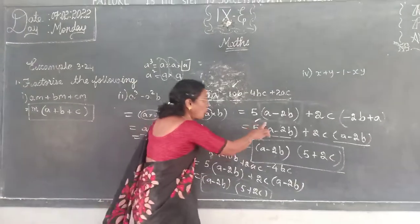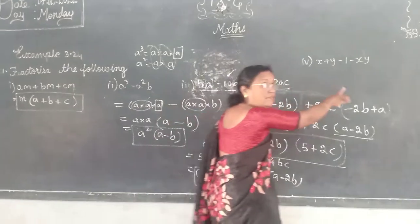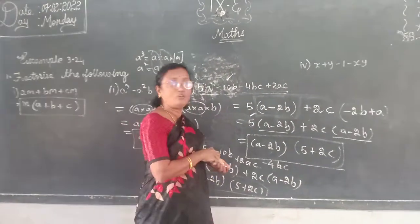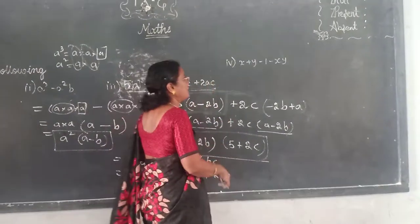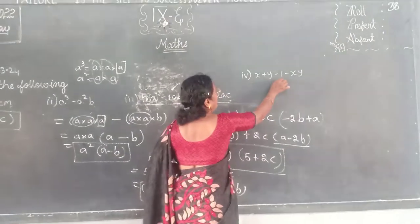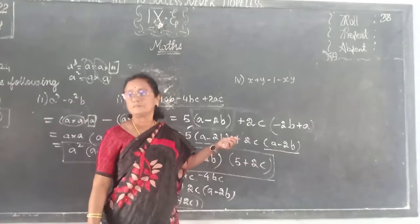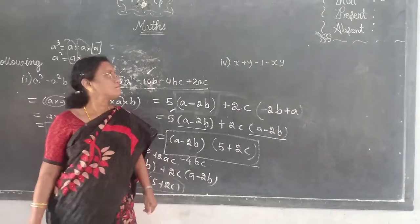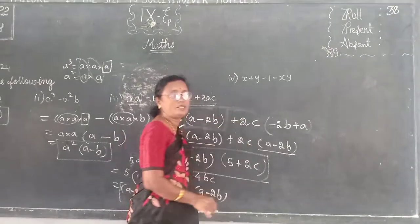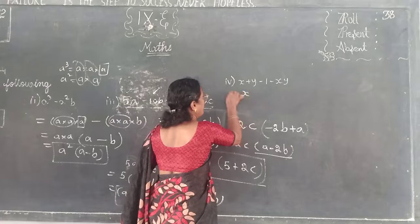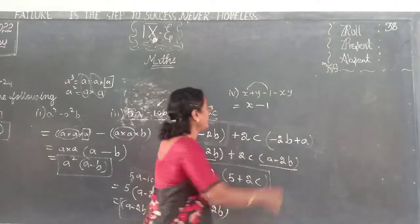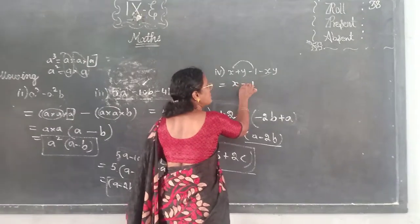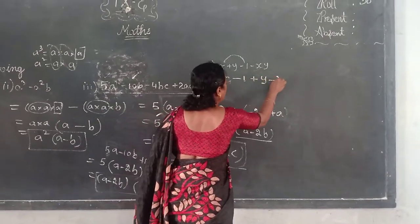This is a group — A minus 2B. Next one. We will rearrange and do that — that's the way we do. Why do we rearrange? Because you have to take the common one. If you rearrange, you get X minus 1. X minus 1 — that's the way to get out. What is common? X minus 1. Plus Y minus XY.